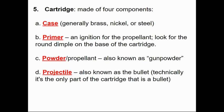The cartridge itself has four parts: the case, primer, powder, and projectile. The case is normally made of brass, nickel, or steel. When you fire that bullet, the case is left behind. In forensics, you may hear that the suspect 'policed their brass' — that means they picked up their cases off the ground so they didn't leave evidence behind.